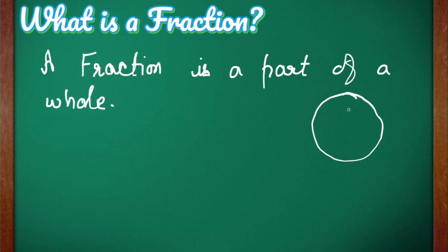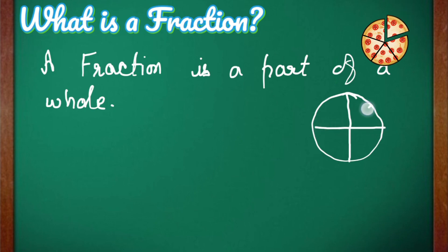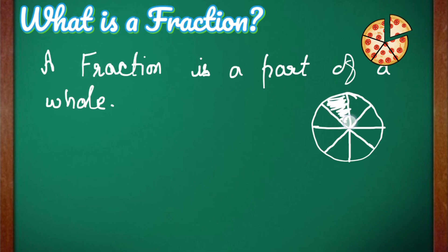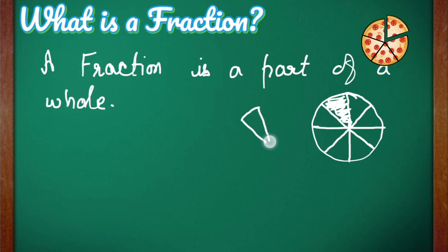For example, let us take a pizza. I have divided this pizza into 8 equal parts. If we eat one piece, 7 equal parts will remain. To express the eaten part in the form of a fraction, we write it as 1 by 8, or we can say we have eaten 1 out of 8 pizza slices.